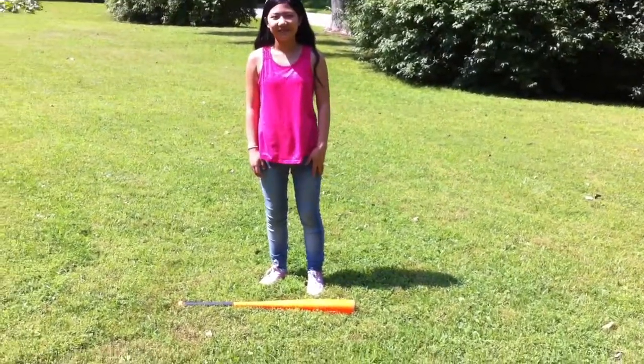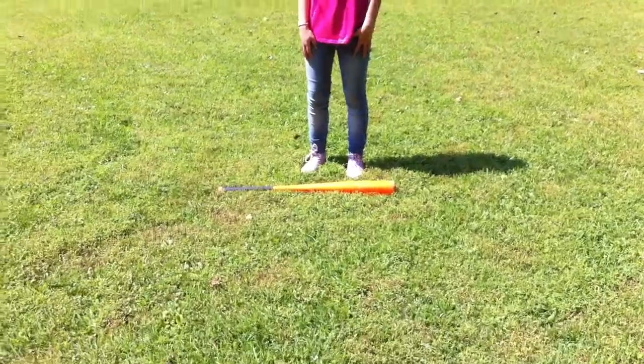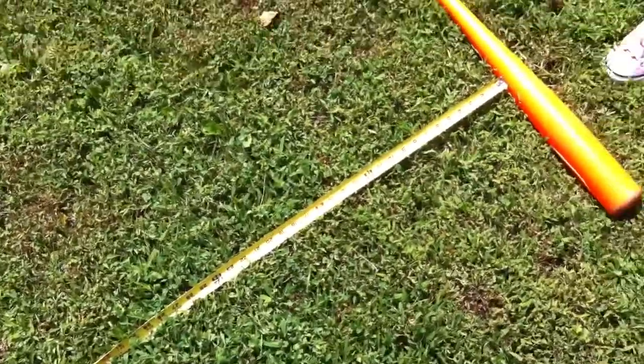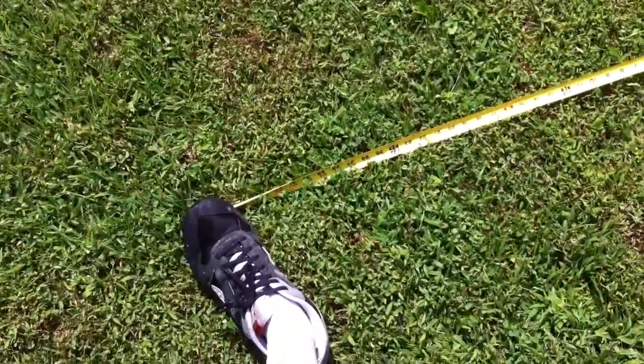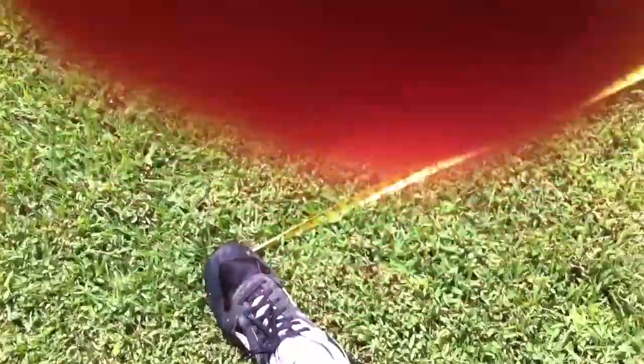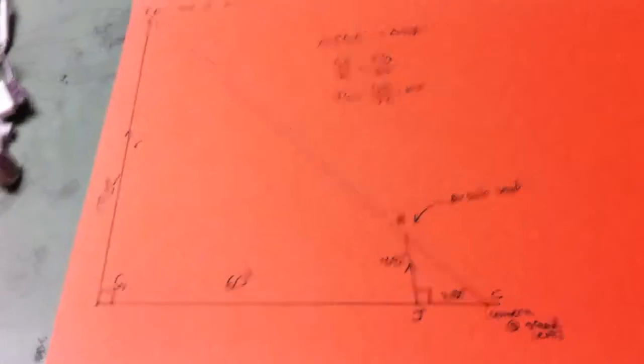So that's our first measurement and I'm gonna see how far back I have to go to line up the top of the tree with her head. All right, so I had to come to a distance of 35 inches in order to fit the tree in or just to have the top of the tree line up with her. So the distance from Jelly Puddle to the base of the tree was 60 feet.